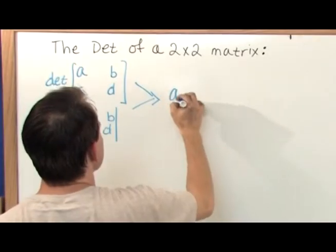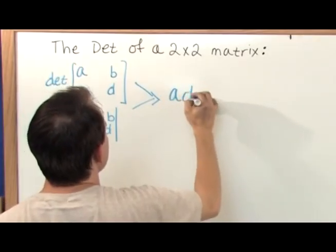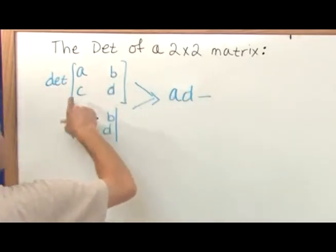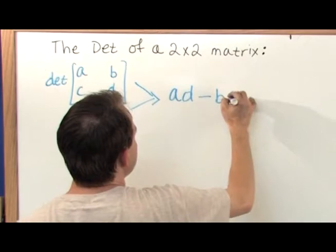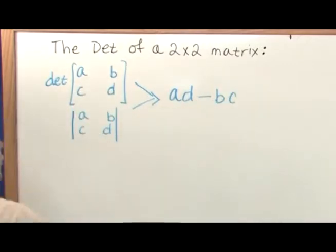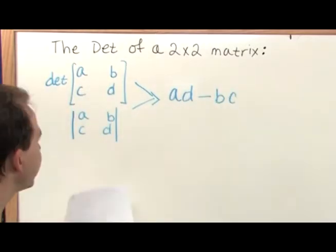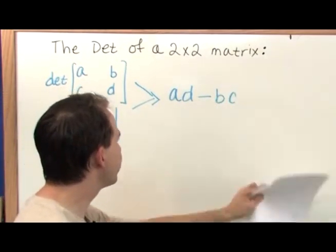A times D minus B times C — that is the determinant. There's no matrix involved, there's nothing to multiply by.